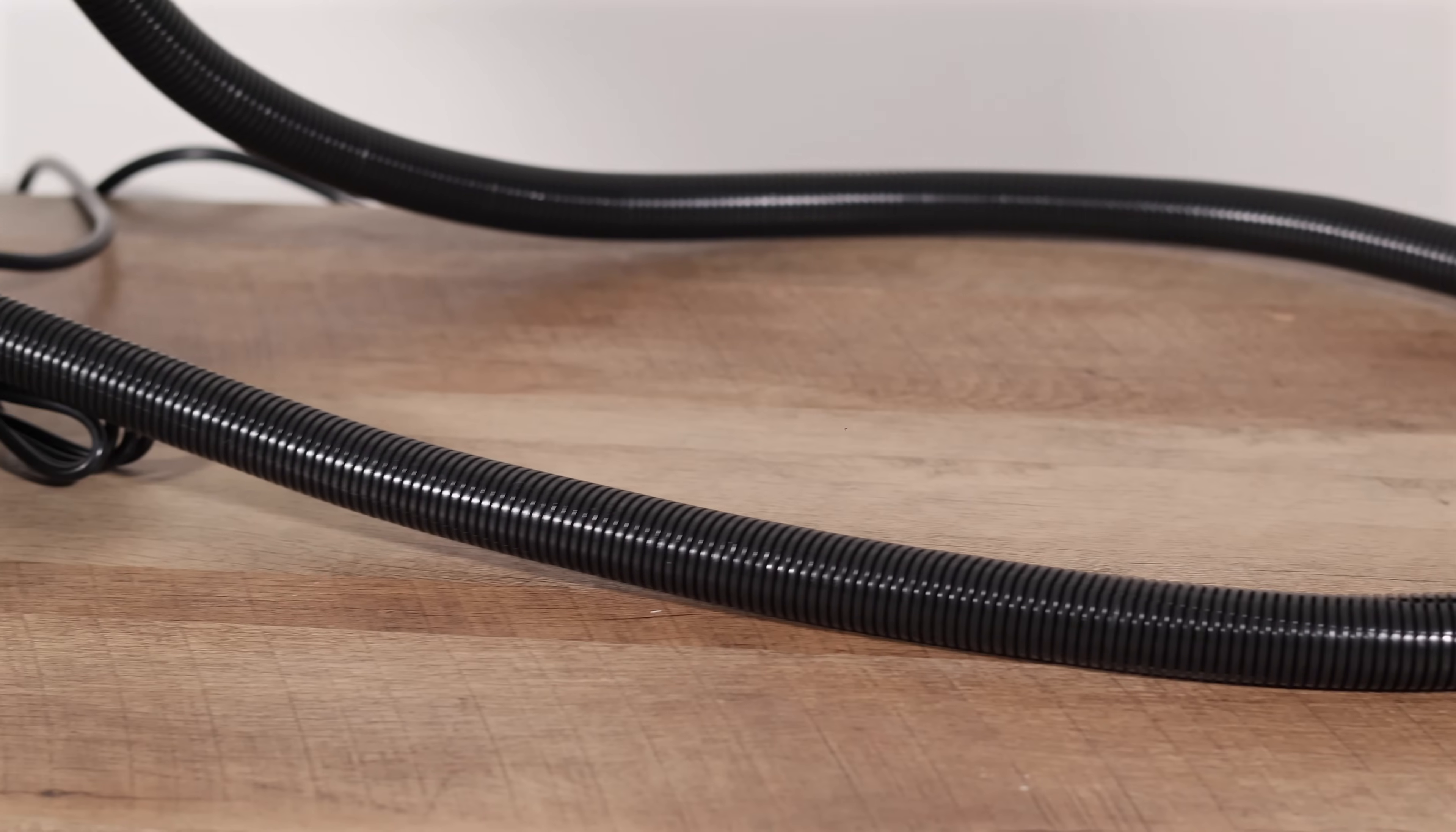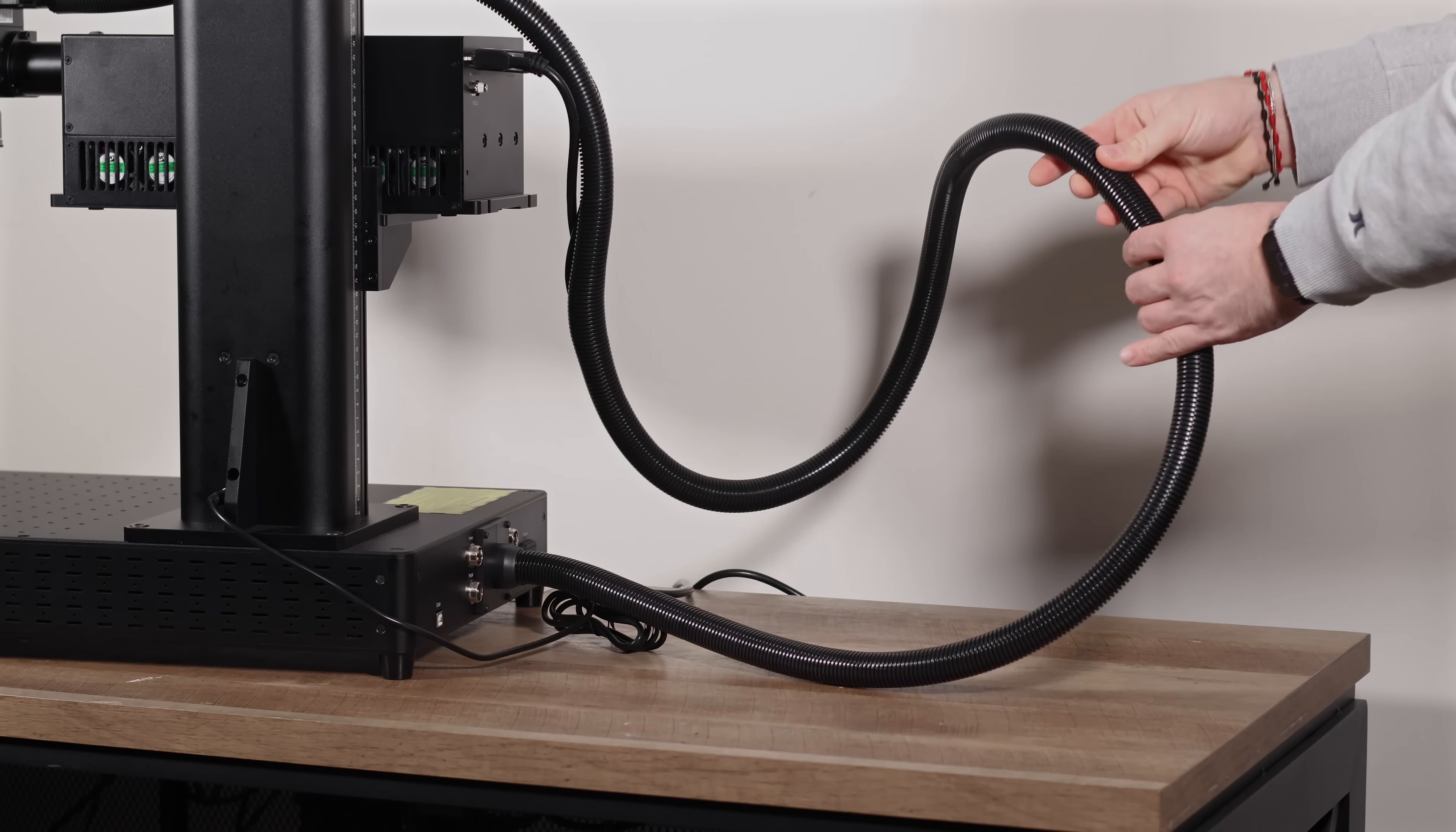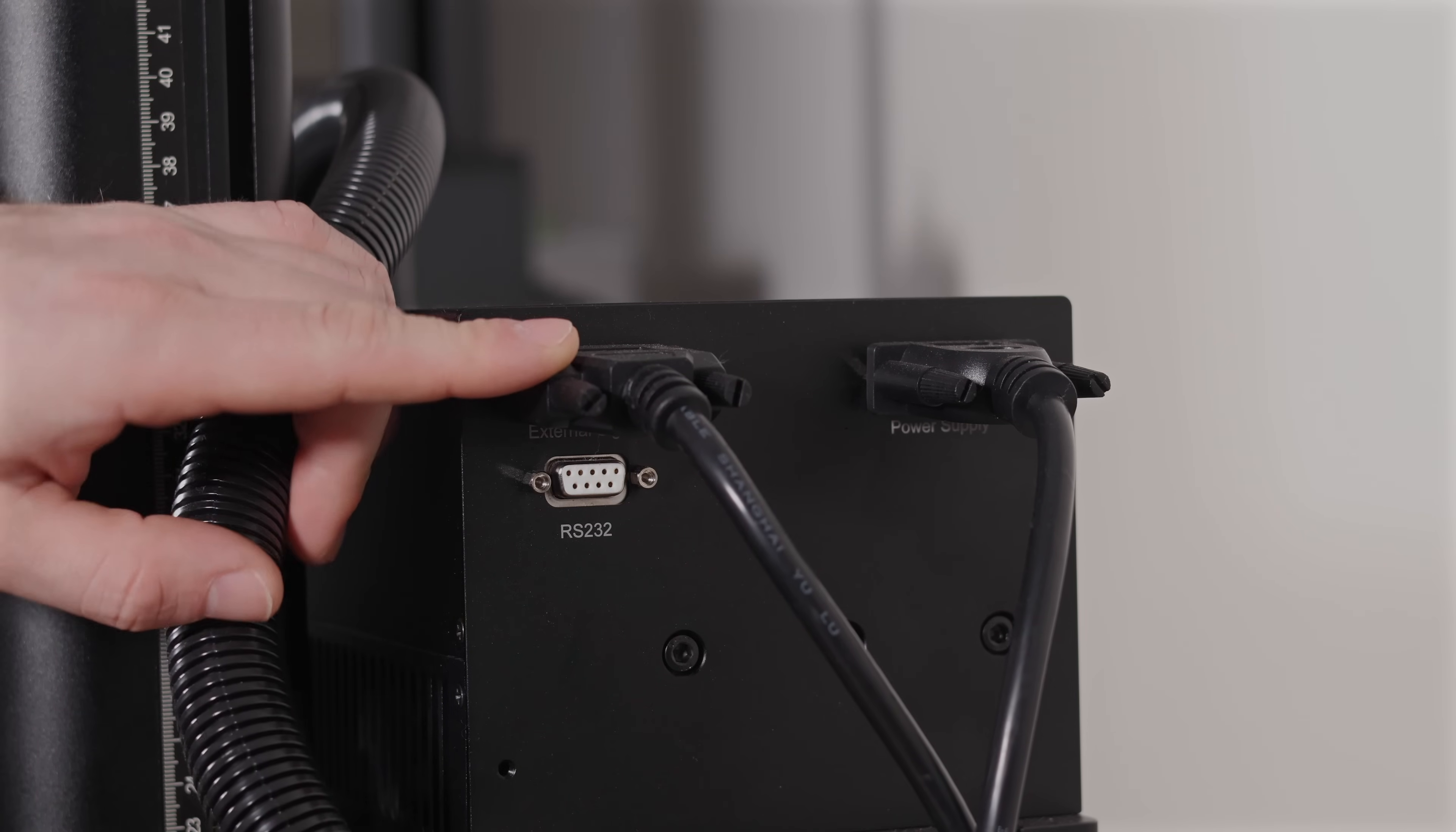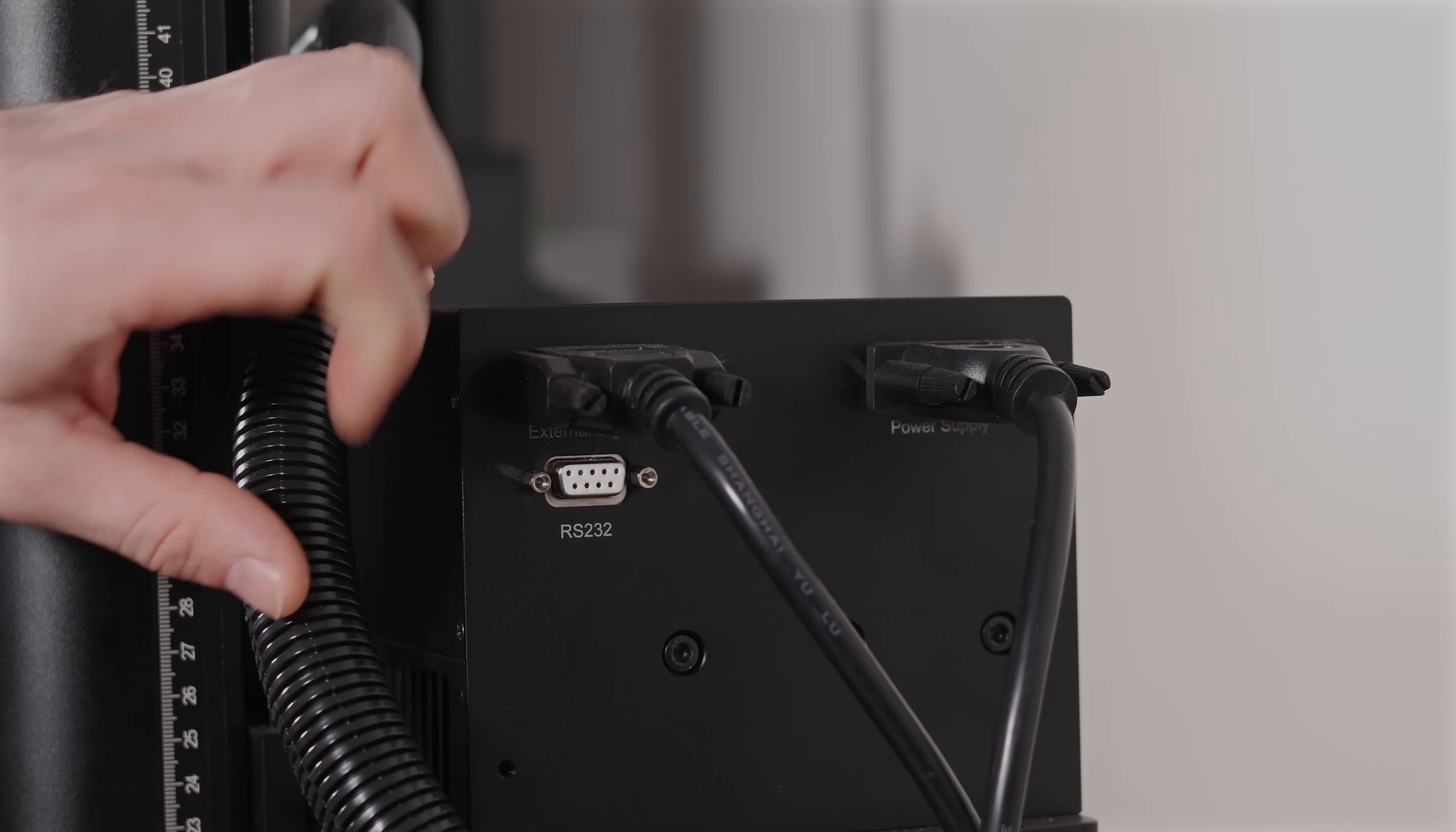Around the back of the Omni, you'll find a long cable that's actually a bundle of three. Unlike fiber lasers with delicate fiber optic cables, this bundle only contains power and data cables for the laser head. In theory, this design should make it much more durable over time.